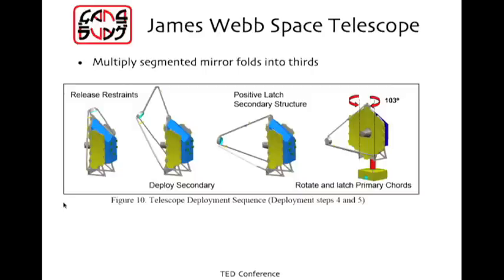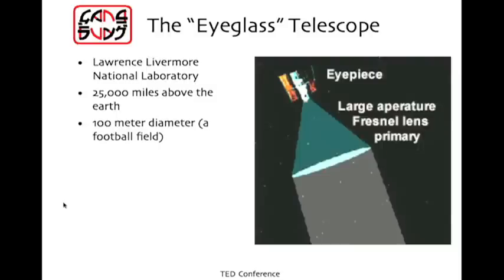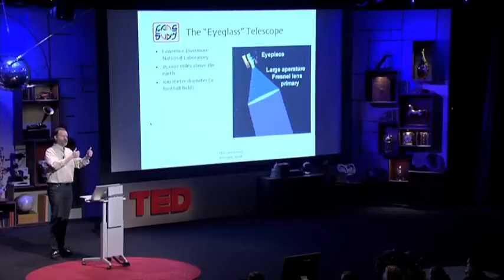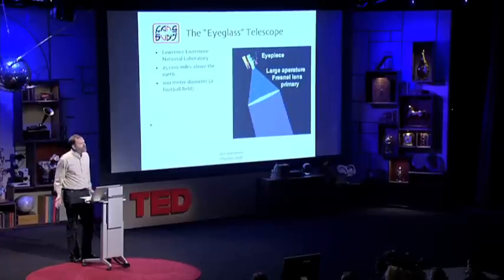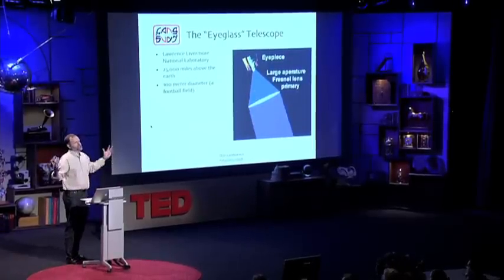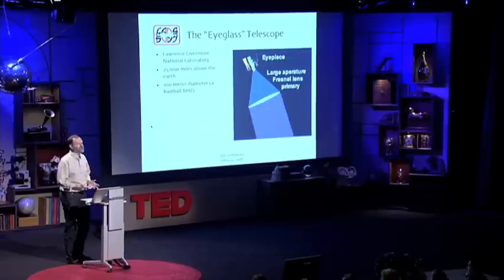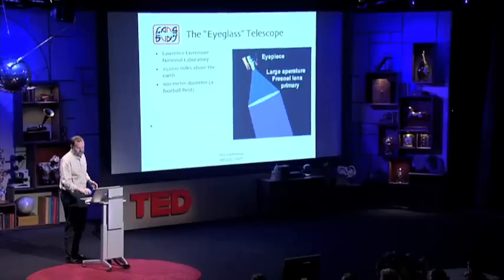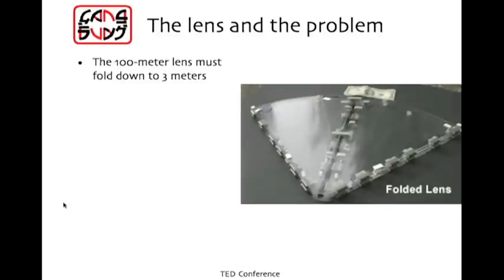But if you want to go higher and go larger than this, then you might need some origami. Engineers at Lawrence Livermore National Lab had an idea for a telescope much larger. They called it the eyeglass. The design called for geosynchronous orbit, 25,000 miles up, a 100-meter diameter lens. So imagine a lens the size of a football field. There were two groups of people who were interested in this. Planetary scientists who want to look up, and then other people who wanted to look down. But whether you look up or look down, how do you get it up in space? You've got to get it up there in a rocket, and rockets are small. So you have to make it smaller. How do you make a large sheet of glass smaller? Well, about the only way is to fold it up somehow. So you have to do something like this. This was a small model, folded lens.